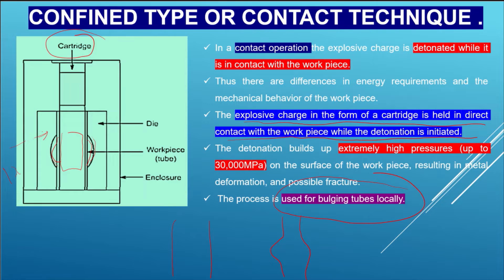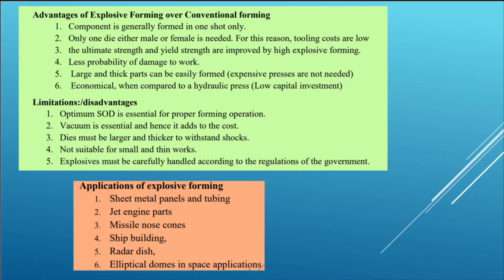To summarize: in the standoff technique, the explosive is at a distance from the work piece — this is the normal explosive forming setup. In the contact technique, the explosive is in direct contact with the work piece, and it is used for confined applications such as tube bulging.